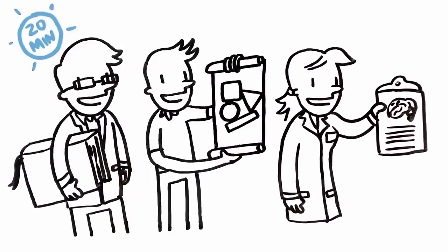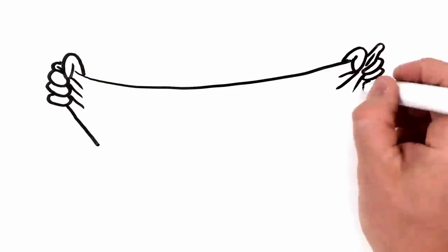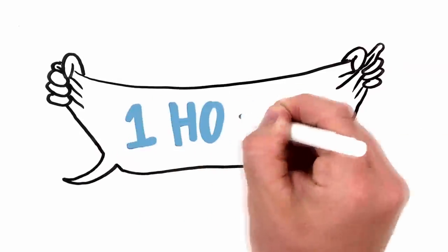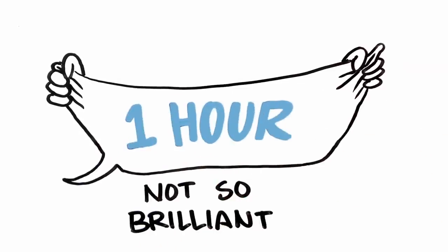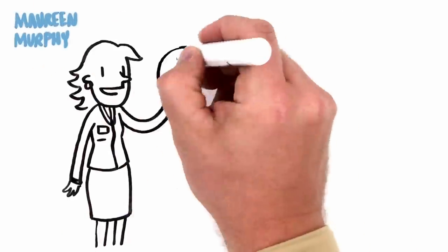...most TED talks are 20 minutes long. I think that's one reason they're so effective. These same presentations stretched out to an hour might not be so brilliant. Maureen Murphy tested the idea that 20-minute presentations are the right amount of time.